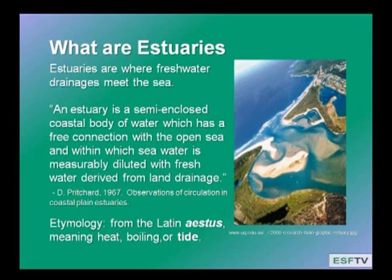Estuaries have been officially defined as places that are semi-enclosed and have a connection between seawater and freshwater. They are very important in terms of human interactions with marine ecosystems. Estuaries are traditionally places where humans chose to build cities because they have a source of freshwater and they often have nice harbors, safe harbors, and they're associated with very productive marine ecosystems, so there was classically a source of food.